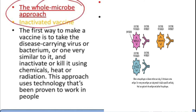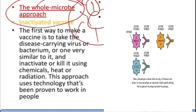As we already discussed, in the whole microbe approach, the whole virus — the whole coronavirus — is being taken as a vaccine rather than a subunit or a protein. The whole coronavirus has been taken in order to instigate our antibodies. If we inject a whole virus, it will definitely cause the disease. But in the whole microbe approach, in vaccines, we either inactivate it or weaken it.